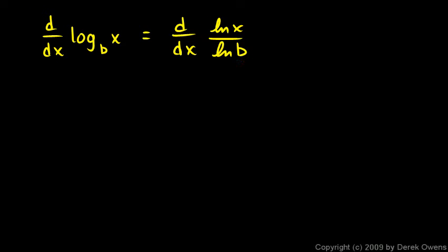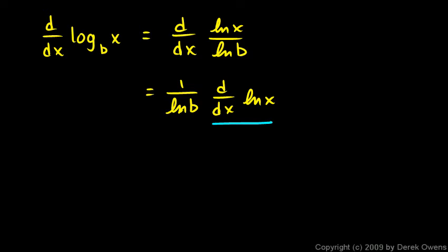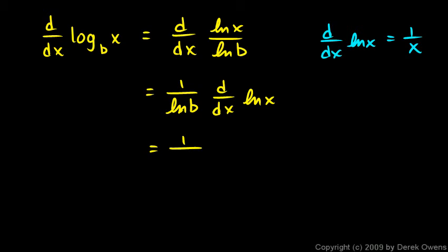So 1 over the natural log of b is just a constant, and it can come outside the derivative. So I write 1 over the natural log of b times the derivative of the natural log of x. The derivative of the natural log function is something we know from earlier: the derivative of ln(x) is 1 over x. So we have 1 over the natural log of b times 1 over x.